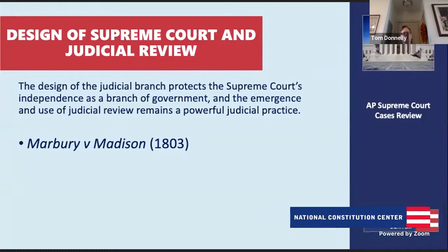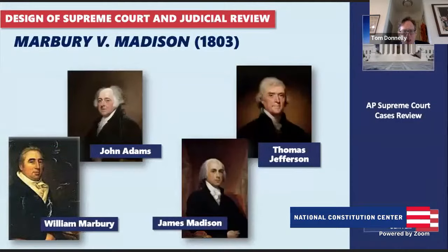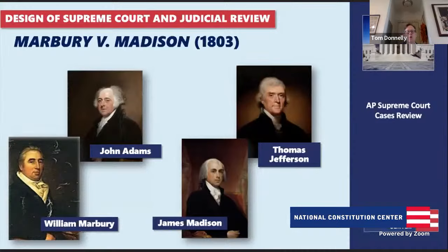Marbury v. Madison grew out of the election of 1800. The outgoing president John Adams appointed William Marbury as a justice of the peace in Washington, D.C. But before Adams left office, they failed to deliver Marbury's commission papers, so he couldn't take office. Marbury brought his case to the Supreme Court, asking Chief Justice Marshall to order Thomas Jefferson and James Madison to give him his commission.